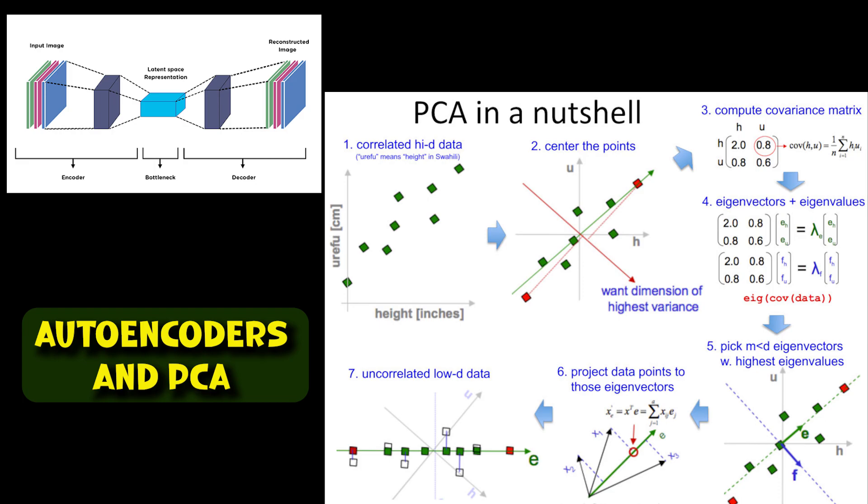Autoencoders are a type of neural network used for unsupervised learning. They consist of an encoder, which maps input data to a lower dimensional representation, and a decoder, which attempts to reconstruct the original input from the lower dimensional representation. The primary goal is to learn a compressed representation of the input data while minimizing the reconstruction error.